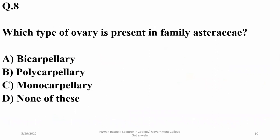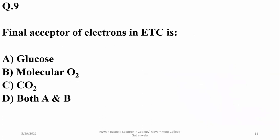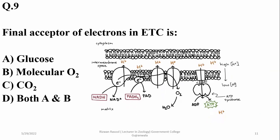Question eight asked which type of ovary is present in the most primitive plants of family Asteraceae (Compositae). The answer is bicarpillary ovary, which is the sunflower family, so the right option is A (alpha). Question nine: the final electron acceptor in the electron transport chain during respiration is molecular oxygen, as seen in the electron transport chain diagram — right option is B (beta).